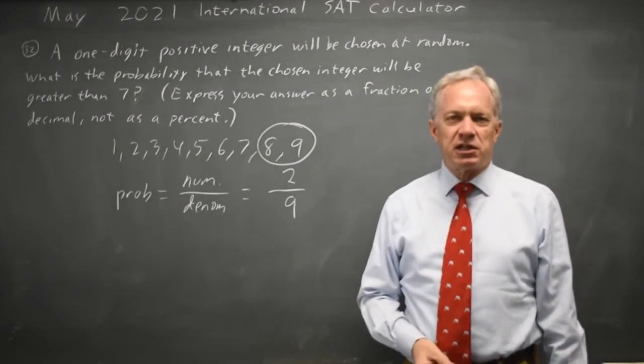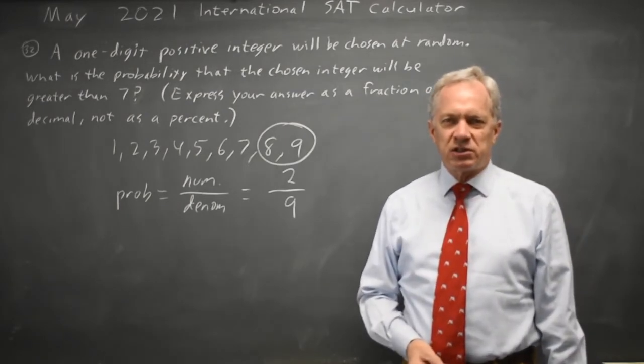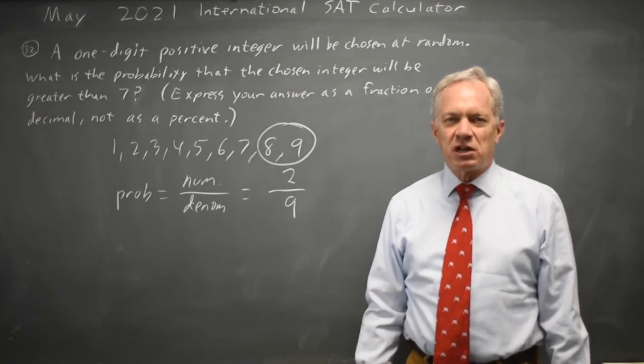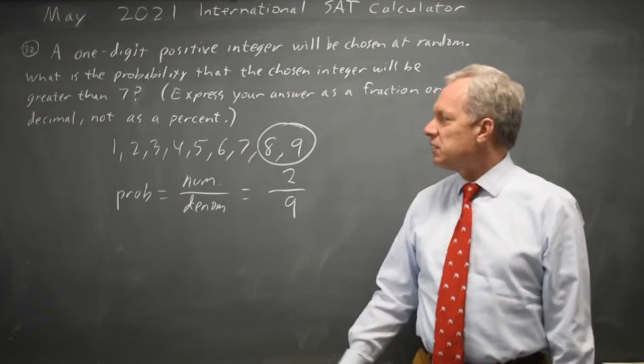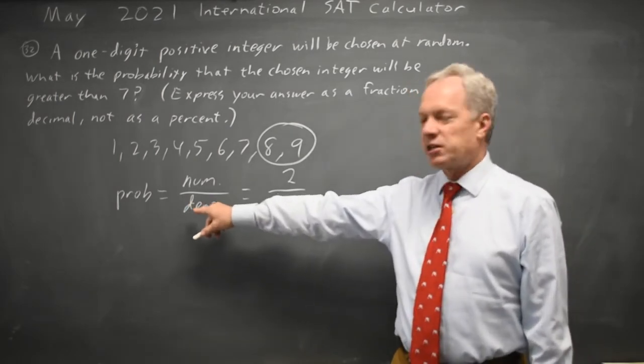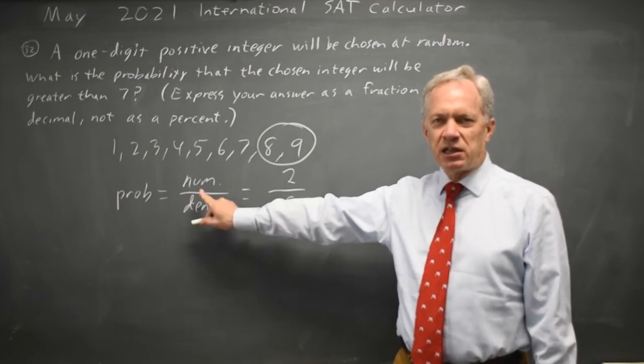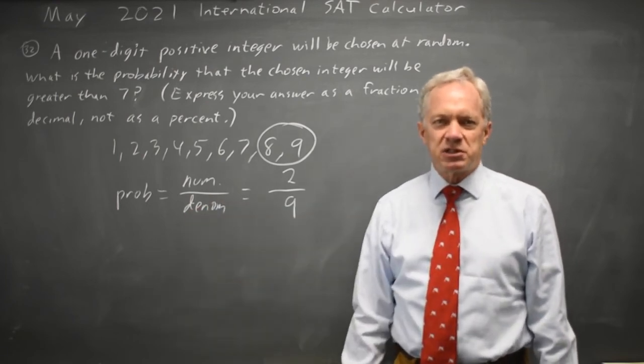And our answer would be 2 over 9, or if you have a calculator, you can find the decimal for that. The College Board often asks probability questions, and I typically organize them by finding the denominator, the number of individuals I could have chosen, and then the numerator of those, which ones are successes.